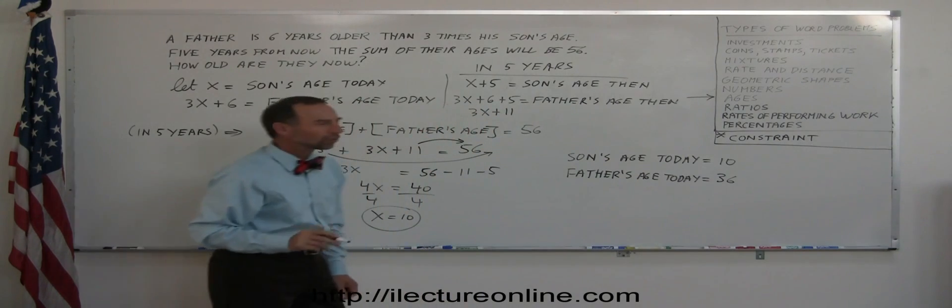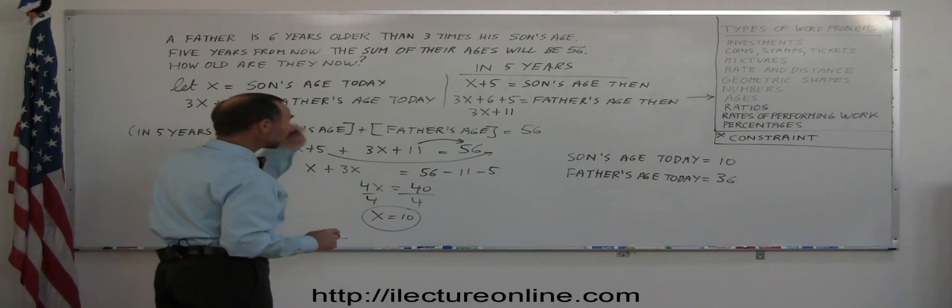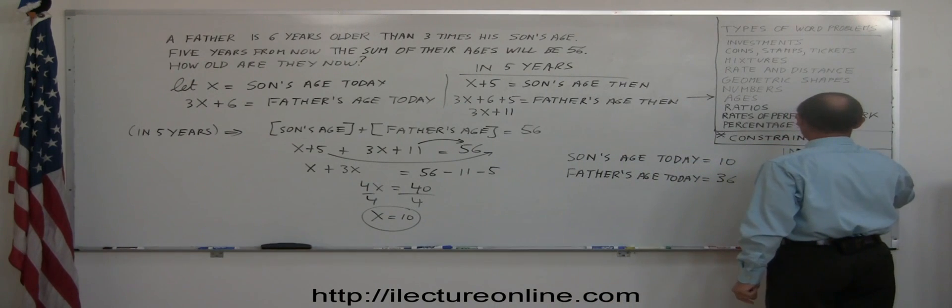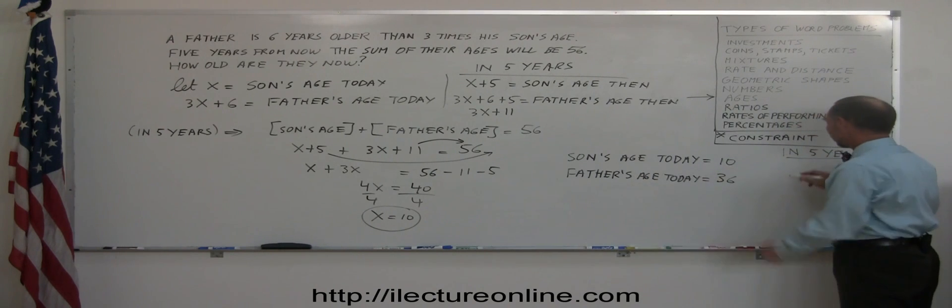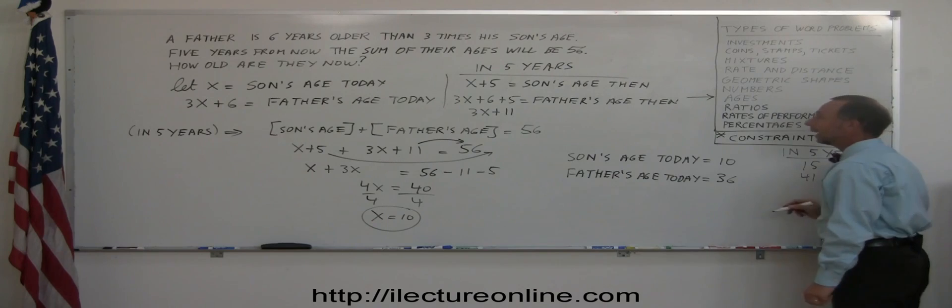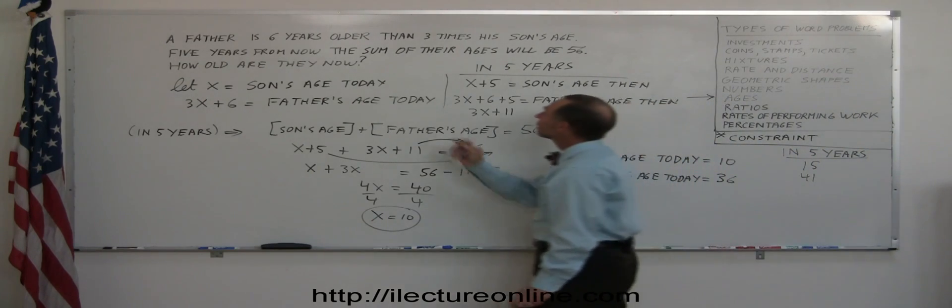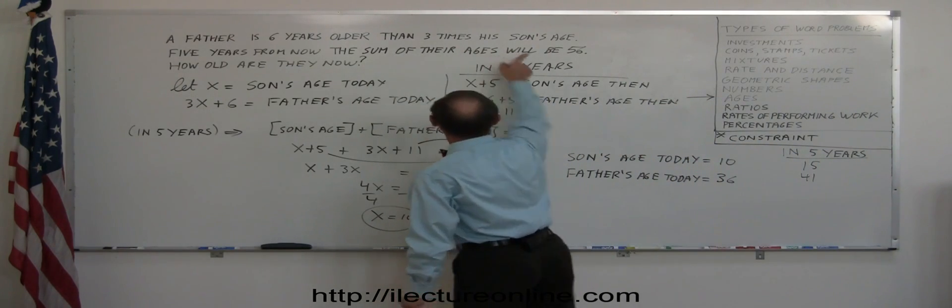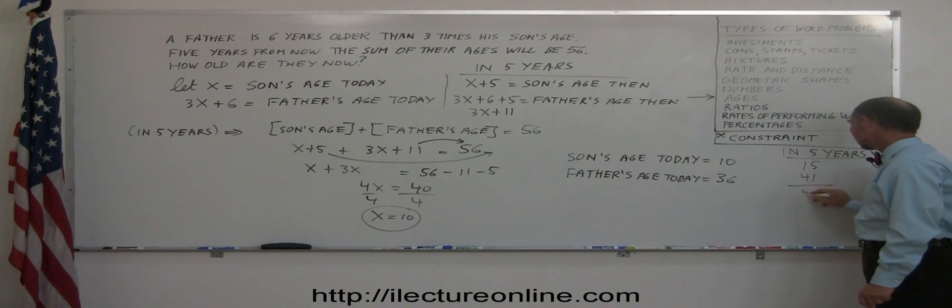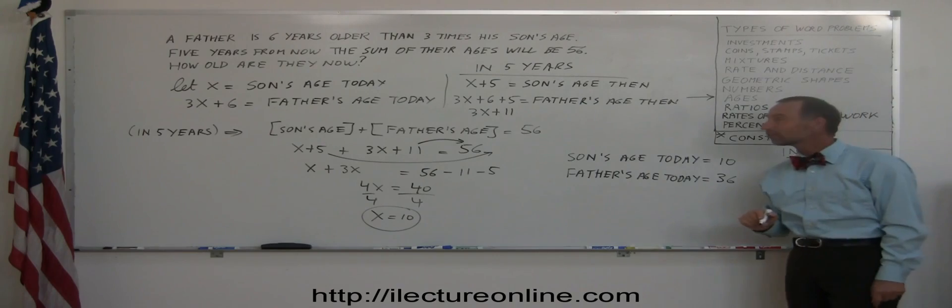And just to make sure we did this correctly, we can add 5 years. In 5 years, the son will be 15. The father will be 41. And look at the constraint. The sum of their ages in 5 years will be 56. If we add them together, 15 plus 41 is indeed 56. We got the right answer.